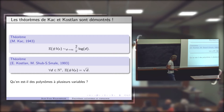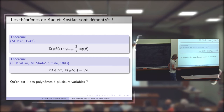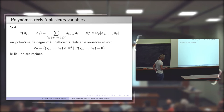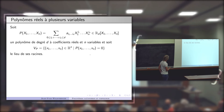Je reprends du début : maintenant mon polynôme P a n variables, et il a une expression un peu plus compliquée, mais toujours comme combinaison linéaire de monômes. Je note, comme précédemment, V_P l'ensemble des racines du polynôme, qui est maintenant un ensemble dans R^n, le lieu d'annulation.